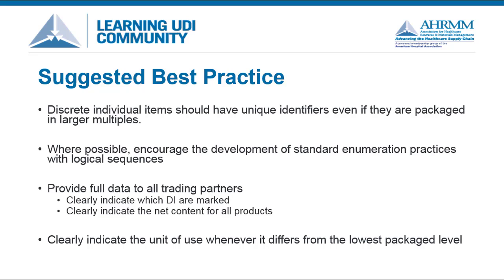First, all discrete items should be identified, even if they are packaged in larger multiples. For example, if you manufacture syringes in pharmacy trays, you should identify individual syringes within the lowest packaging level as well as at the tray or case level. Second, wherever possible, encourage the development of standard enumeration practices with logical sequences. If your policies permit, it may be beneficial to standardize around the use of specific identifiers related to specific packaging levels.